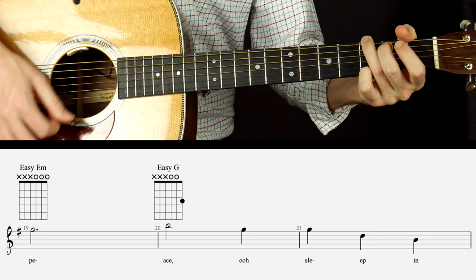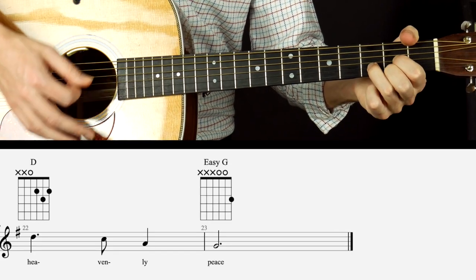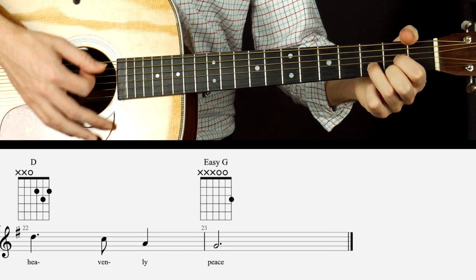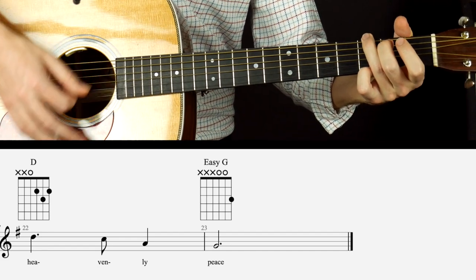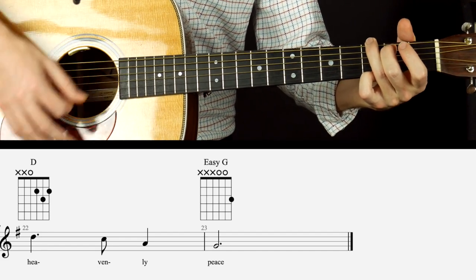Sleep in. Then one measure of D. Heavenly. Then one measure of D. Heavenly. Peace. Then two measures of G to end it. And that's really it.